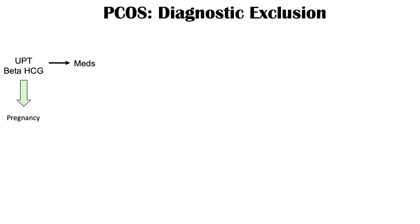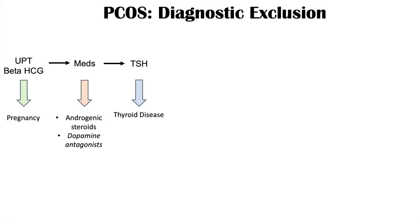You then want to look at their medications, as some medications like androgenic steroids or dopamine antagonists could explain signs and symptoms. Next, check TSH or thyroid stimulating hormone to rule out thyroid disease, since hypo- or hyperthyroidism can cause similar issues with oligo- or amenorrhea. You also want to check prolactin to see if these patients have hyperprolactinemia — which can have many causes including dopamine antagonists or micro/macroadenomas — because hyperprolactinemia can cause menstrual cycle irregularities.